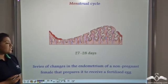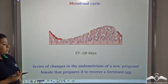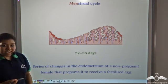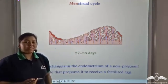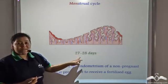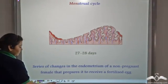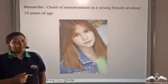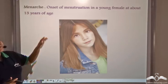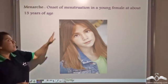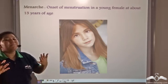The series of changes in the endometrium of a non-pregnant female that prepares it to receive a fertilized egg is known as the menstrual cycle, and the menstrual cycle lasts for about twenty-seven to twenty-eight days before another cycle begins. The onset of menstruation in a young female of about thirteen years of age is known as menarche — 'men' comes from menstrual flow and 'arche' means beginning.